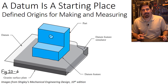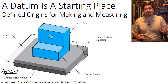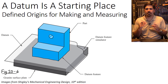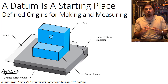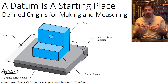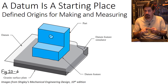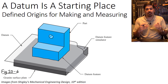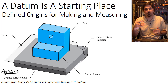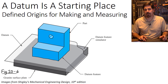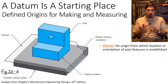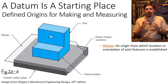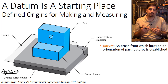A datum is a starting place — a little double entendre I figured I'd throw in right at the beginning. A datum is an origin from which the location or orientation of part features can be established. If you know what the origins are for your part, it gives you a place where you can set that part up to either measure it or make it accurately, allowing you to make measurements relative to that origin in either the making or inspecting process.